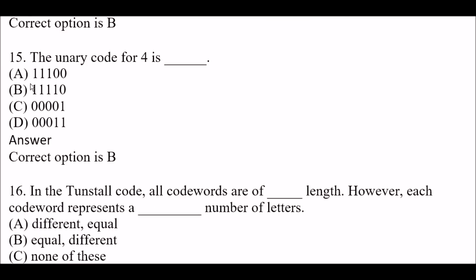Next question: The unary code for 4 is — Option A: three 1s and two 0s. Option B: four 1s and a 0. Option C: four 0s and a 1. Option D: three 0s and two 1s. The right answer is Option B, four 1s followed by a 0. This is the unary code for 4.